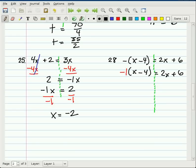That negative 1 gets distributed to both of those terms in the parentheses. So I end up with negative 1x plus 4. Notice that's a plus because a negative 1 times a negative 4 is a positive 4. Equals 2x plus 6.